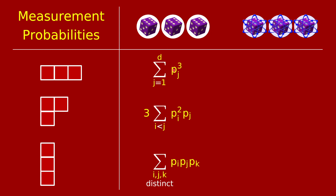It's elementary probability to calculate the probabilities of these three events. The probability of three rolls all being the same is the sum of the cubes of the p_j's. Getting two copies of one outcome and one of a different one is three times the sum of p_i squared times p_j. And all three distinct is the sum over distinct i,j,k of p_i p_j p_k. These are three different symmetric polynomials in the p's, and they add up to one.